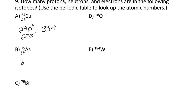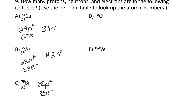Arsenic (As) has atomic number 33. So it has 33 protons, 33 electrons, and then 75 minus 33 is 42 neutrons. Bromine (Br) is number 35. So it has 35 protons, 35 electrons, and then 79 minus 35 is 44 neutrons.